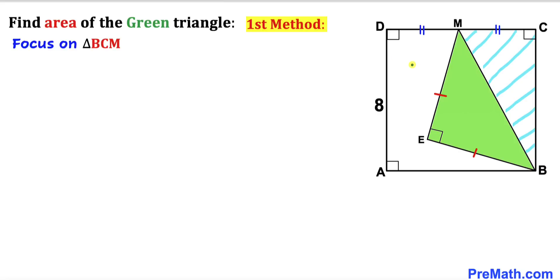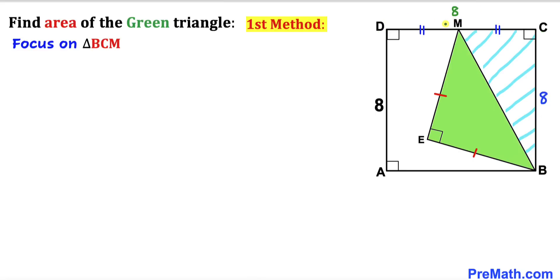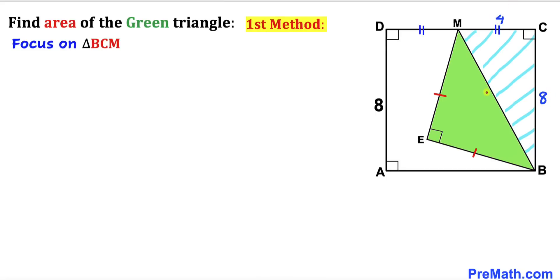Since we are dealing with this square and the side length is 8, both BC and AB are 8 units. Since M is the midpoint of DC, segment DM is 4 and segment MC is 4 units as well. So in triangle BCM, the two legs are 8 and 4, and we are going to calculate the hypotenuse BM.